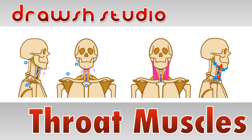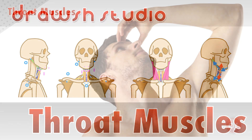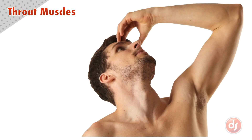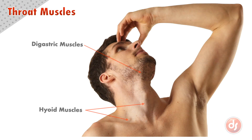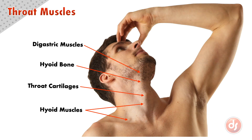Welcome to Draw Studio. Today we're going to learn about the muscles of the throat. The throat is made up of a series of muscles and other structures that run along the front of the neck. Learning the structures of the throat will help us understand the form of the neck on the surface and how the muscles will attach.